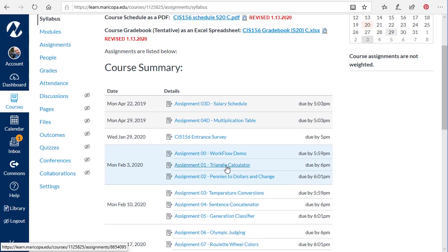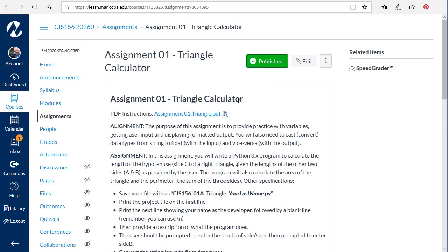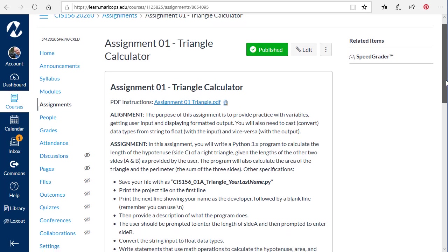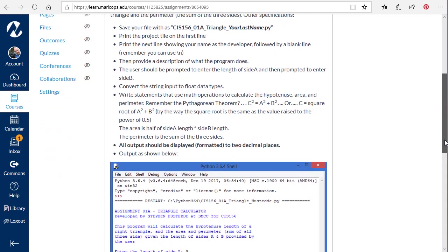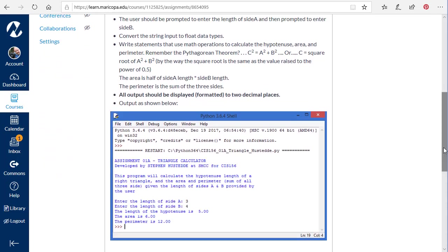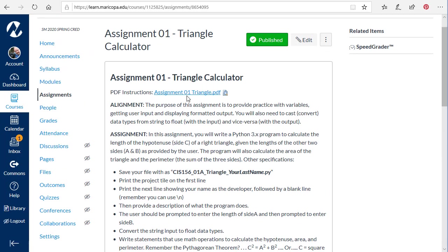So I can click on this assignment for triangle calculator and see information about that project, why we're doing it, how it aligns to the course. Some information about the assignment itself. I also have for each of the assignments a PDF. And I like to work off the PDF. So I'm going to open up the PDF by clicking on it.